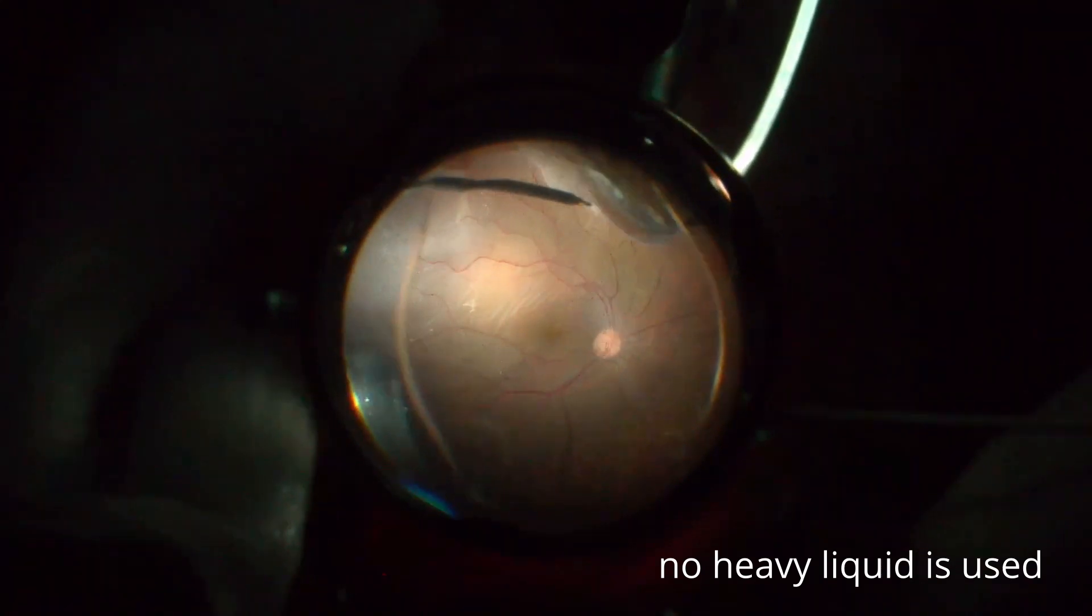In this case, as you can see, peripheral retina shows multiple lattices degenerations and it is always very difficult in this case to remove all adherent vitreous layers. All retinal descents and all lattices are then marked.